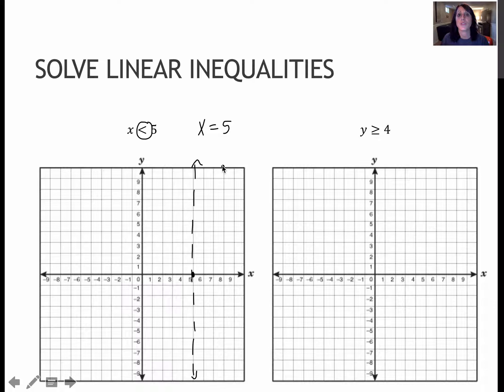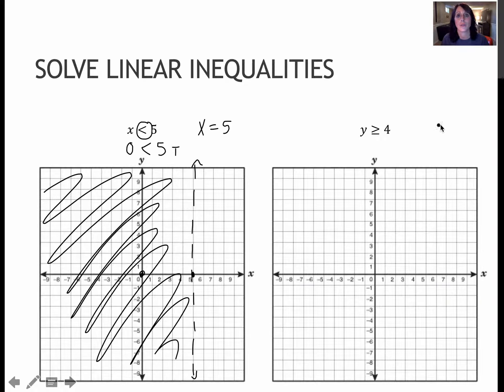Okay, and now I have to figure out which direction should I shade. Again, use the test point. In this case of 0, 0, I'll replace x with 0. I can't replace y with 0 because there is no y. But is 0 less than 5? Yes, it is, which means I shade on the side that contains 0, 0.